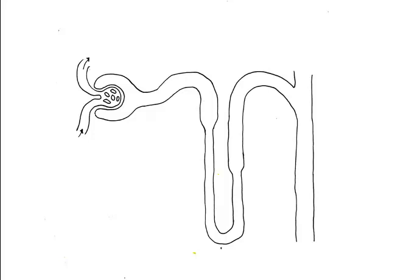The first step, pressure filtration, occurs at the glomerulus. The glomerulus is a network of capillaries. As blood enters through the afferent arteriole, blood pressure forces fluid and small molecules out of the capillaries.